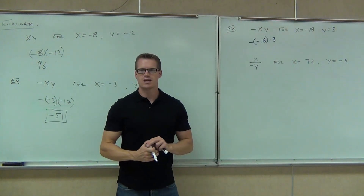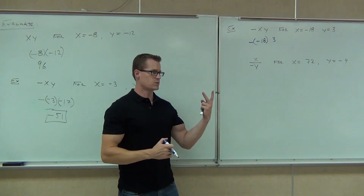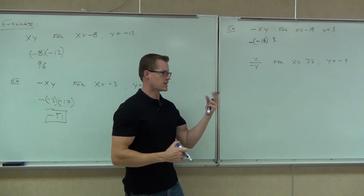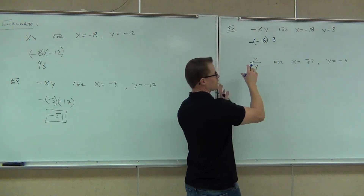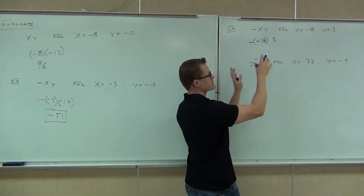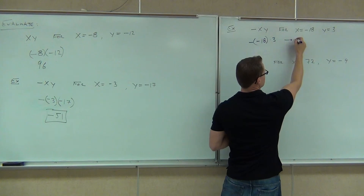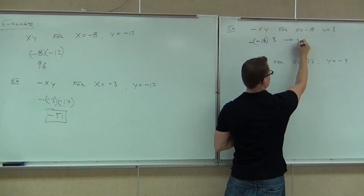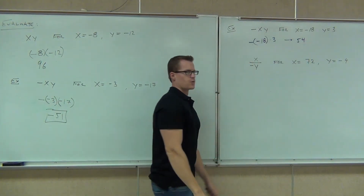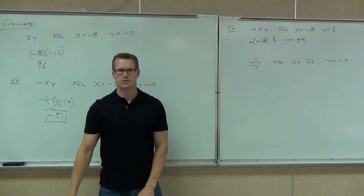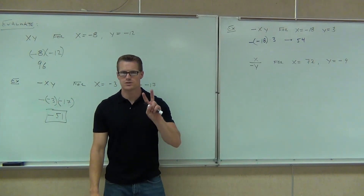Is this going to be a positive or a negative answer? Positive. Definitely — we have only two negatives. Negative and a negative make it positive, and we're multiplying. So we take positive 18 times positive 3, and we're going to get 54. Positive 54, definitely positive, because we have only two negatives.